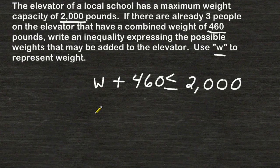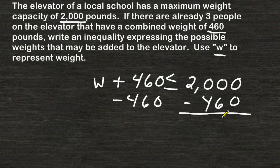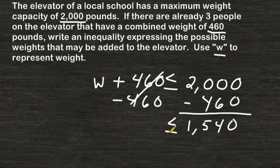Now to figure out all of the possible values of W, the next step is to isolate the W variable by subtracting 460 from both sides of our inequality. 2,000 take away 460 is 1,540. We bring down our inequality sign and the variable that is all alone on the left-hand side of our inequality.